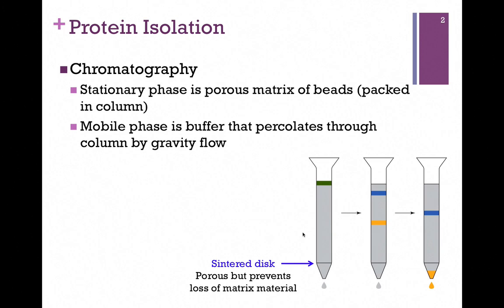The column is packed with a matrix of porous beads, and they're retained in the column by the presence of this sintered disk pictured at the bottom of our column here. It's solid to support the matrix within the column, but porous enough to allow the flow of liquids through by gravity flow, and that buffer is our mobile phase. We apply a solution to the top of the column, and it percolates through the column by gravity flow.